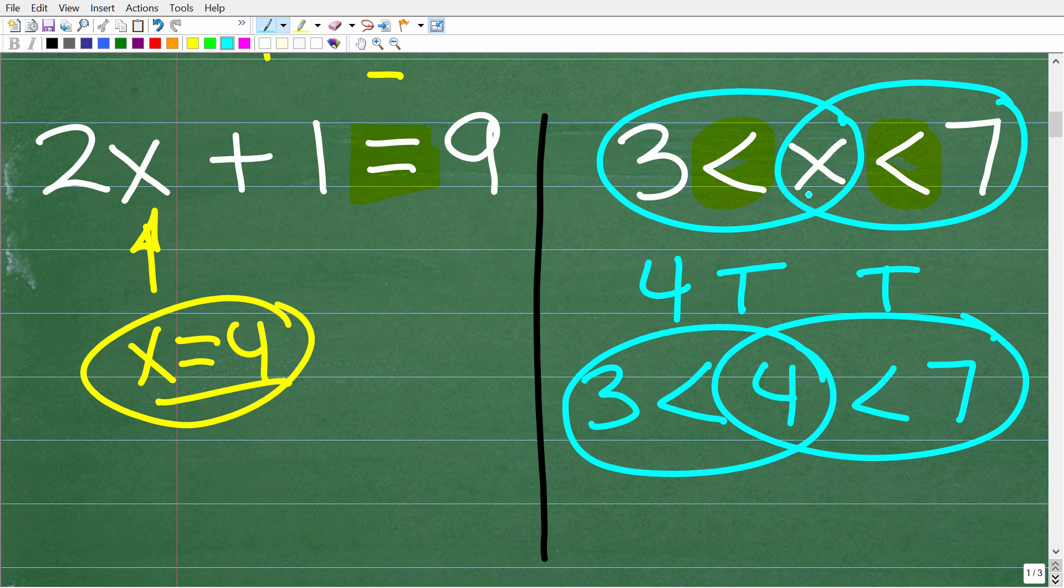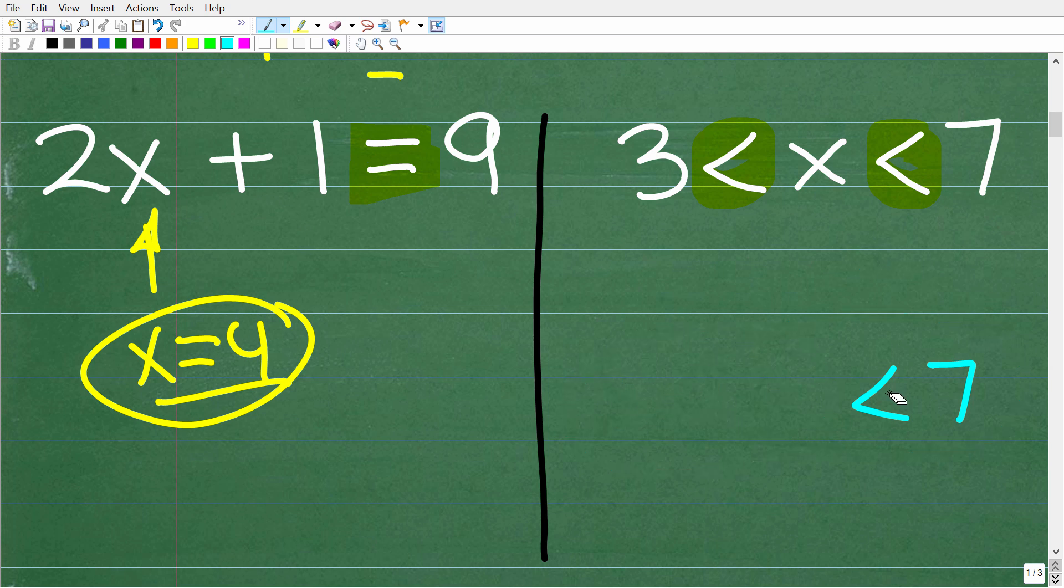But it's not the only solution, right? So 5 works as well, and so does 6. So we have different numbers here that work to this inequality. But here is the big idea, all right? So we're talking about numbers that are greater than 3. Matter of fact, let's see this graphically.